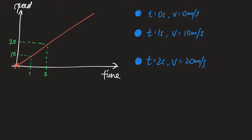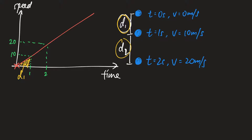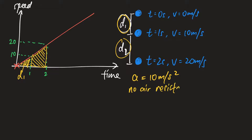If you notice, the distance covered every second is getting bigger and bigger. To find the distance d1 covered by the ball, you look at the area underneath the graph. The area for d2 is visibly greater, meaning every second the ball covers a greater distance — it is accelerating. For this situation, the acceleration is a constant 10 m/s², assuming no air resistance. Next I'll show you three examples where the object follows this speed-time graph.